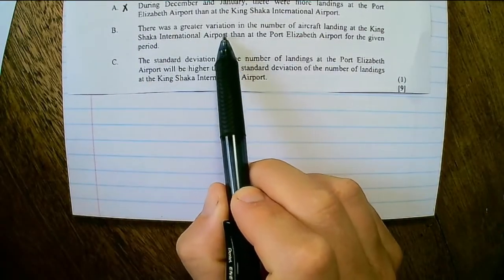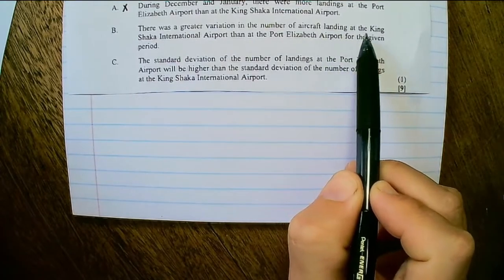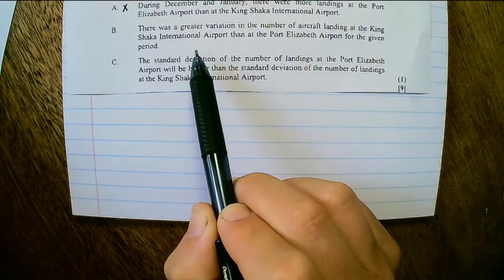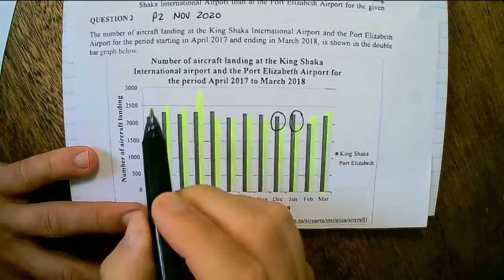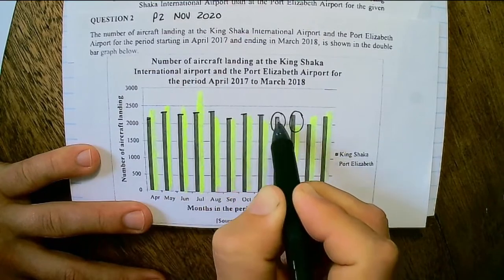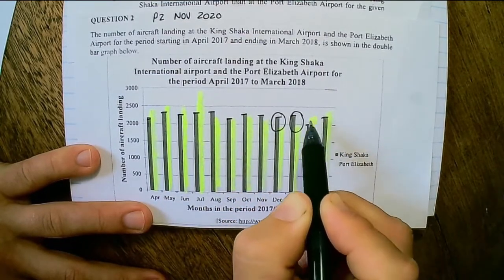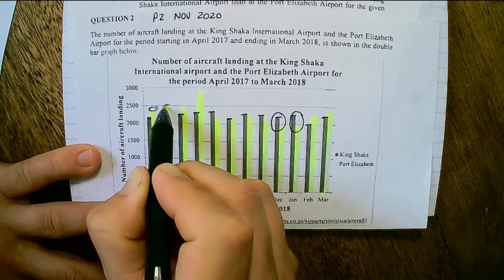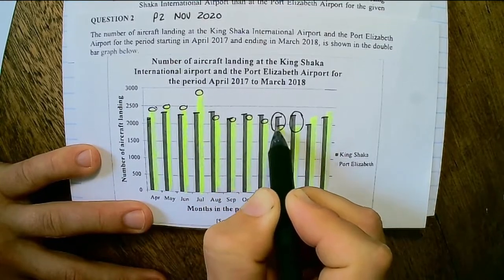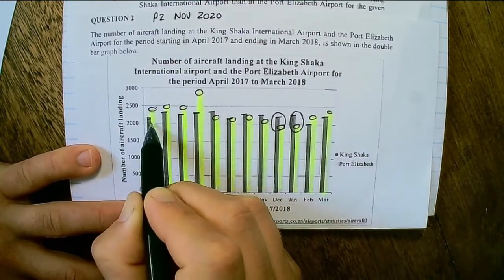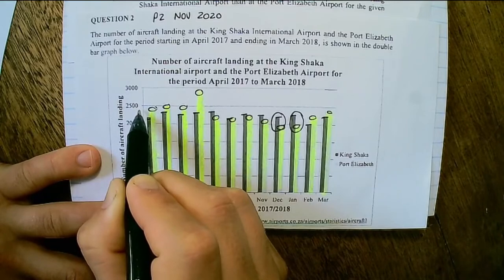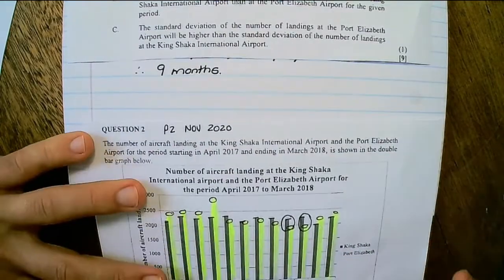Option B: There was a greater variation in the number of aircraft landings at the King Shaka international airport than at Port Elizabeth airport for the given period. If we look at variation, they are saying that King Shaka has a higher variation than the Port Elizabeth airport. You can see that the range of the Port Elizabeth airport is much wider than the range of the King Shaka airport, and the King Shaka flights are more or less within this band between 2000 and 2500. So that statement would be false.